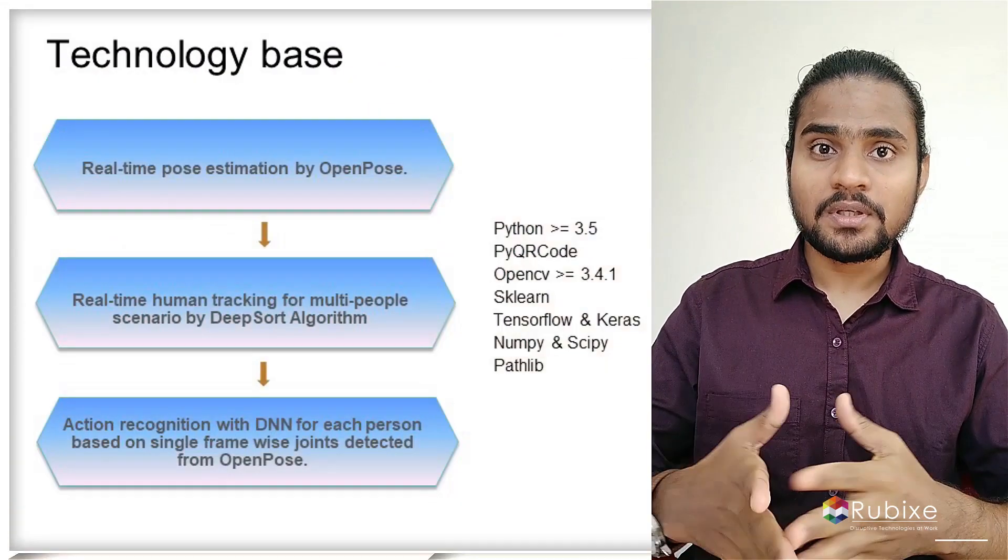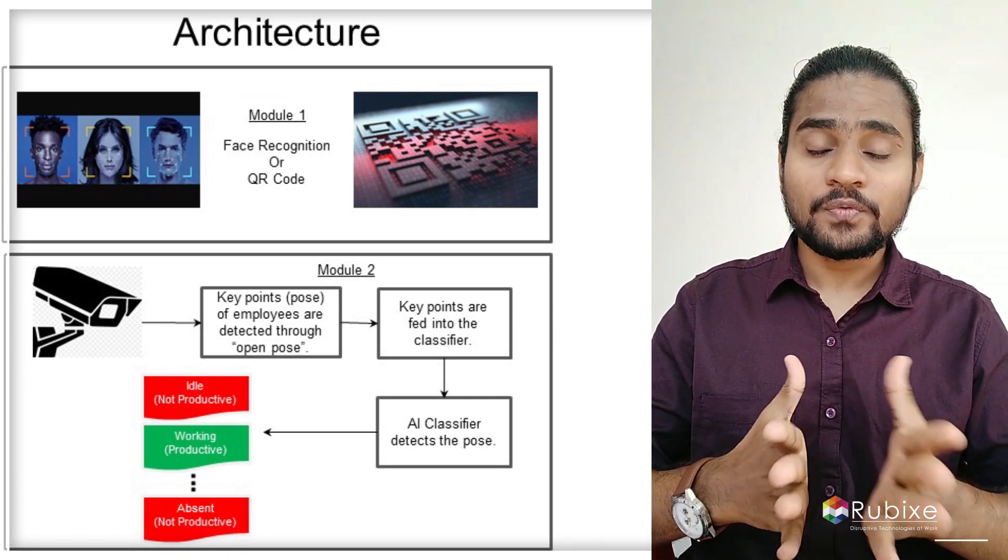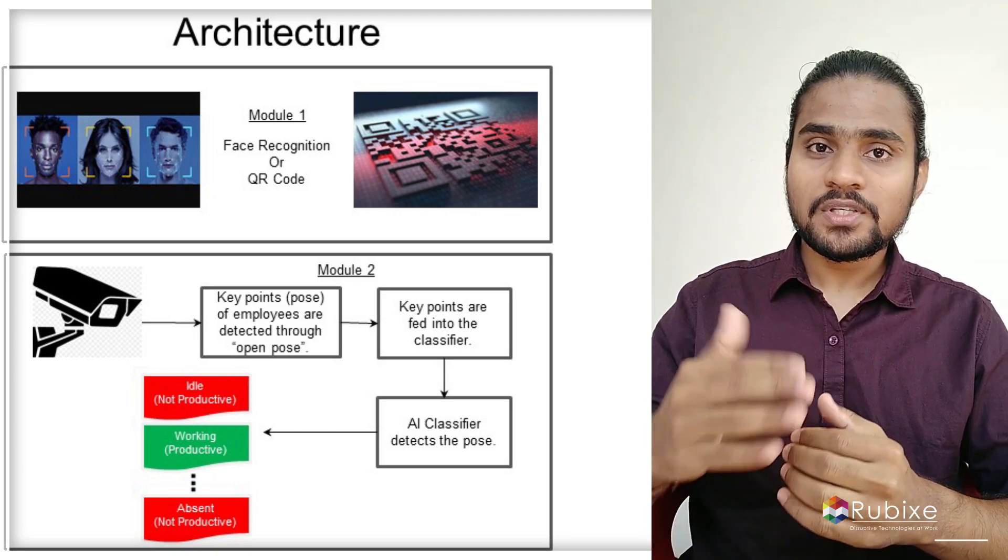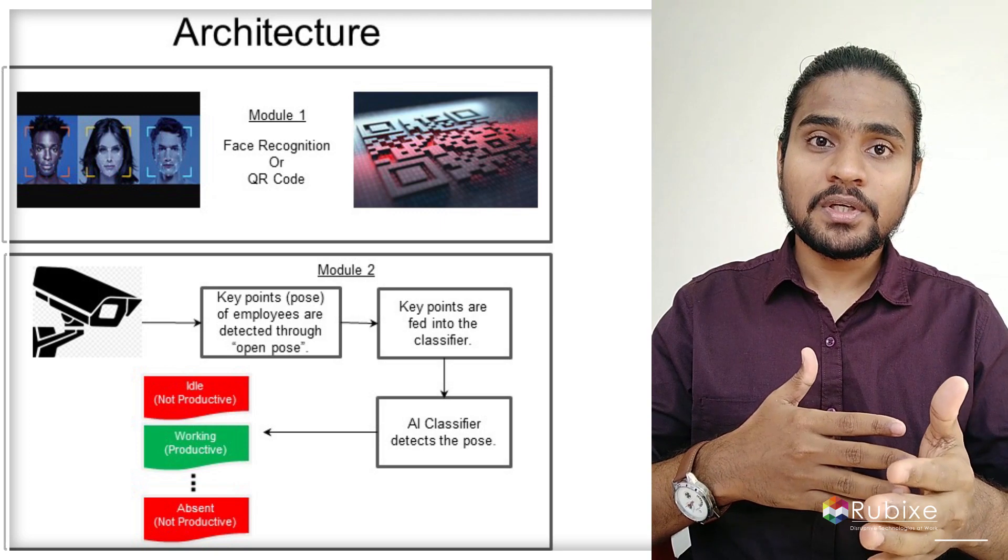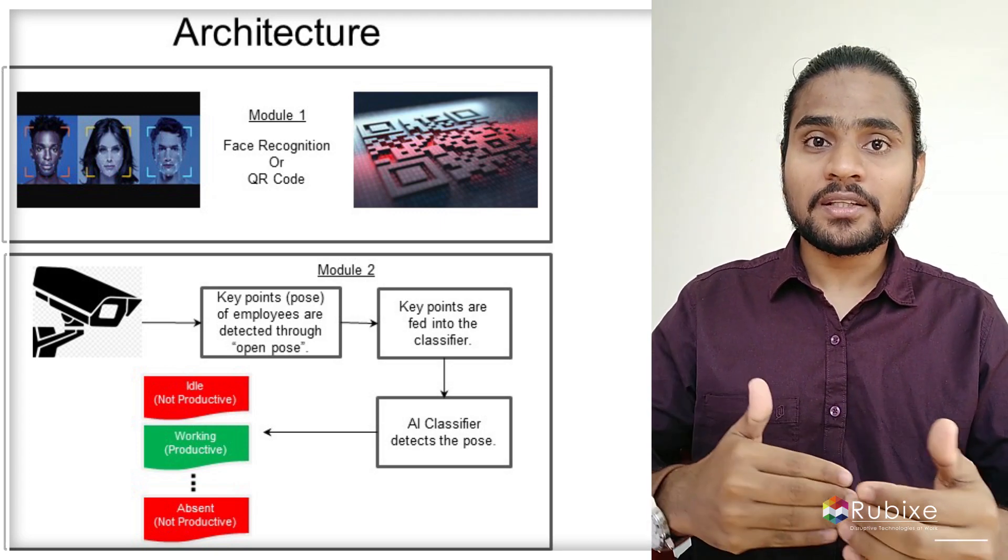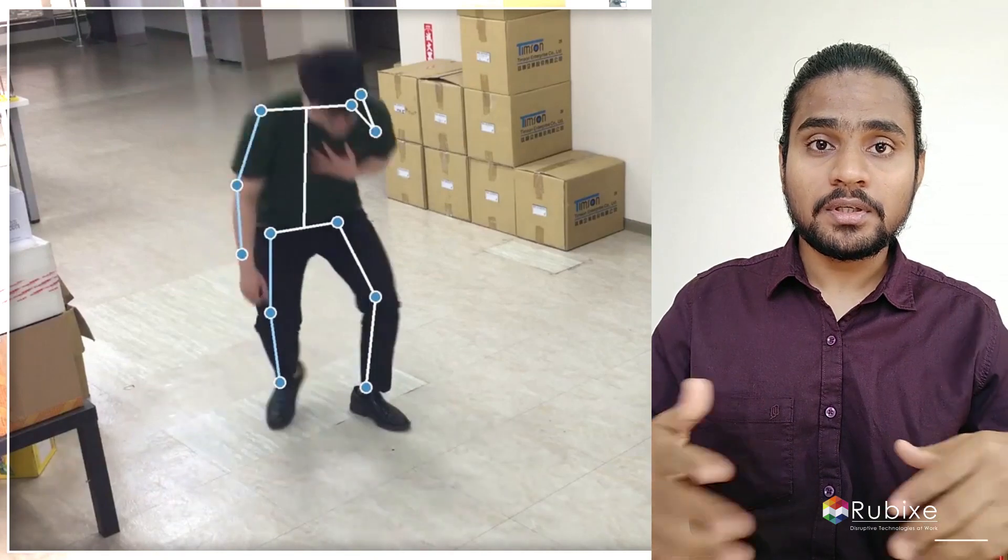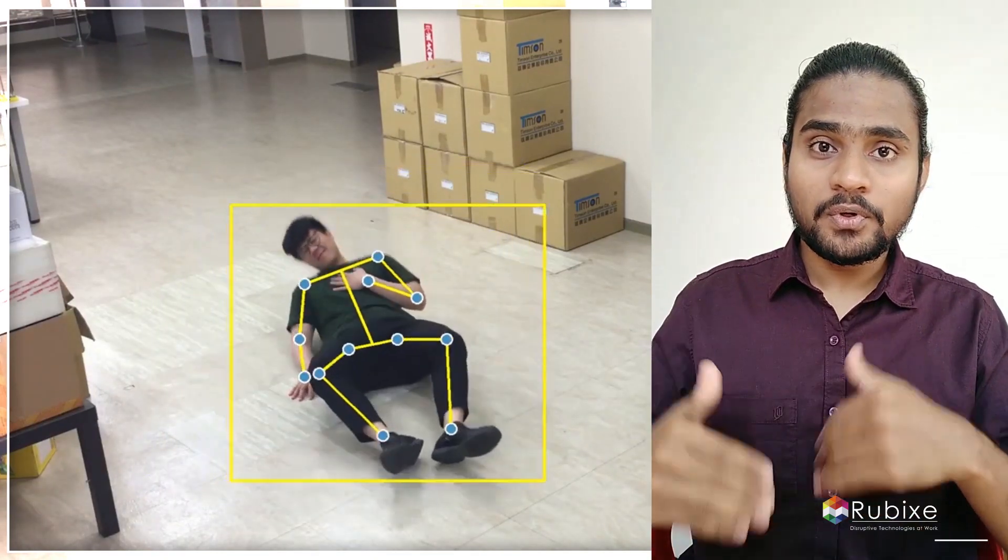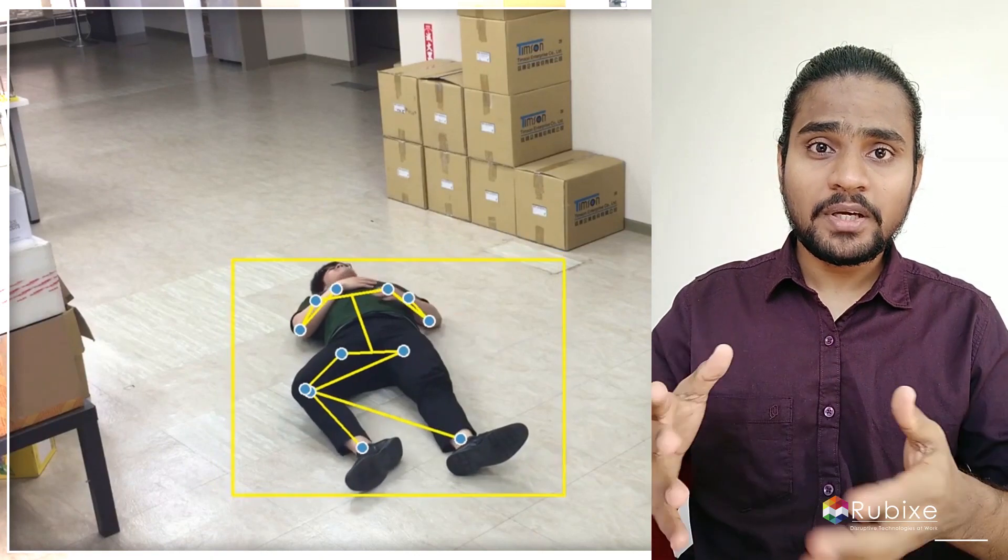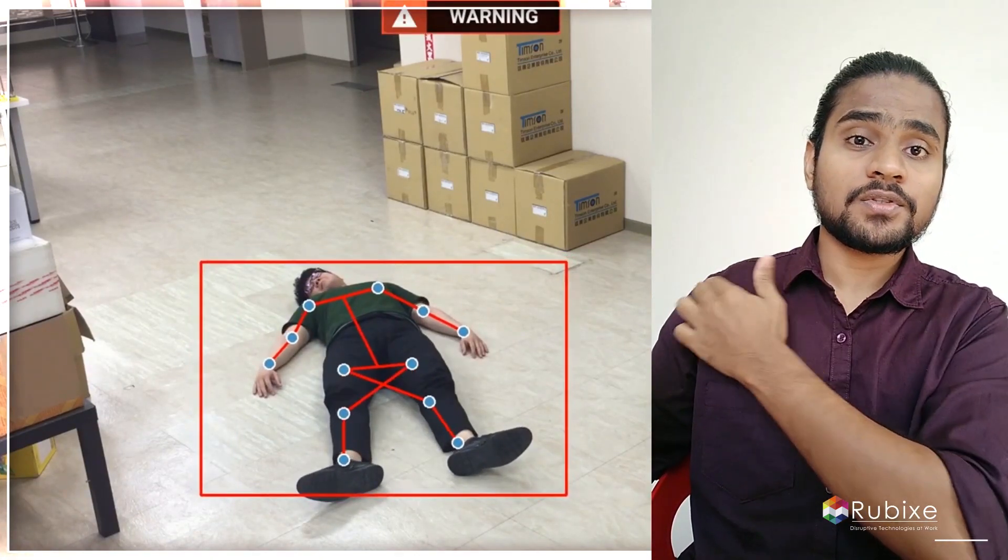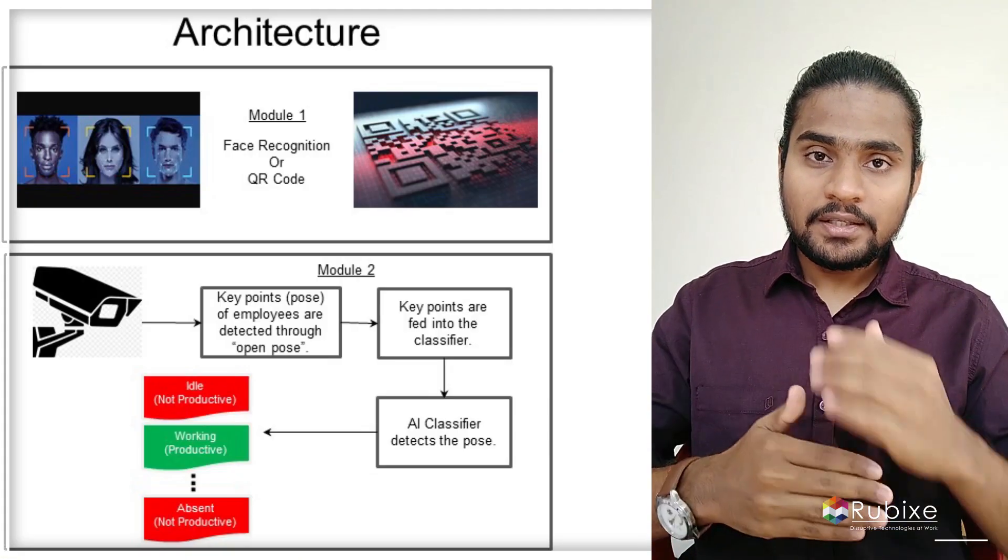CCTV cameras will be placed in the corners. From those cameras we'll be getting the videos, and from those frames we'll be trying to detect the humans by using key points and then pairing them. Initially we'll be detecting the key points: eyes, nose, shoulder points, elbow points, hips, knees, and foot. All these points will be initially identified based on particular mapping, and then based on affinity map we'll be able to pair them. After the pairing, we get a human structure.